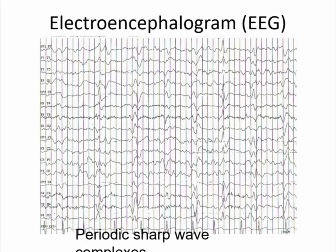This is an example of periodic sharp wave complexes on an EEG. EEGs have become somewhat less helpful in diagnosing CJD currently, but they are still important to rule out other things like seizures.